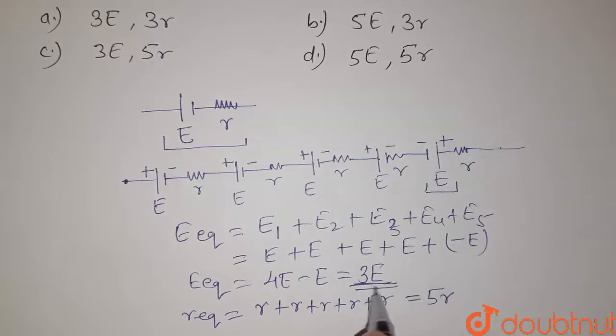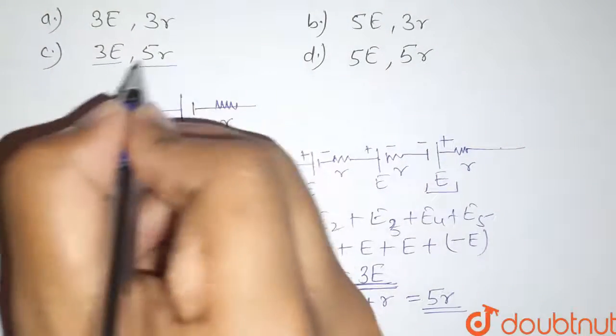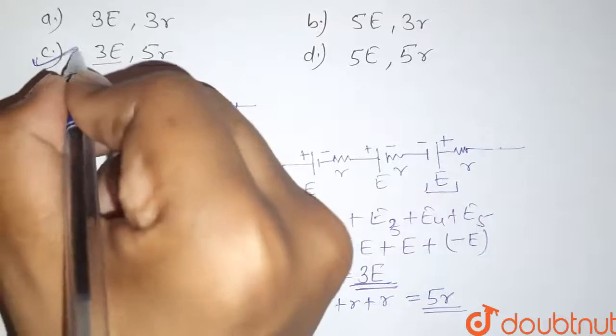So the equivalent EMF is 3E and equivalent resistance is 5R. So here option C is 3E and 5R. So this will be our correct answer for this question.